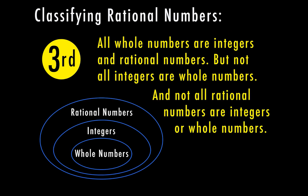All whole numbers are also integers and rational numbers. So all numbers in the center whole number circle are also categorized as integers and rational numbers. A number can be in all three categories, just two, or sometimes just one. Not all integers are whole numbers — 4 is a whole number and an integer, but negative 4 is only an integer, not a whole number. Not all rational numbers are integers or whole numbers — for example, 3.4 is rational but is not an integer or a whole number.